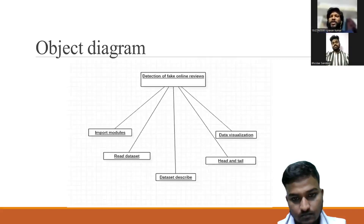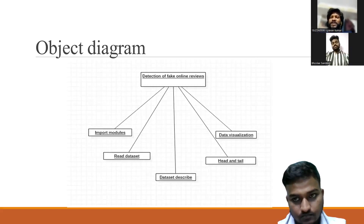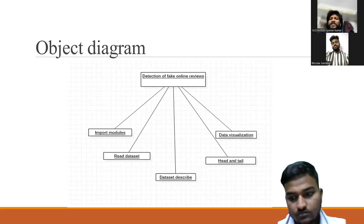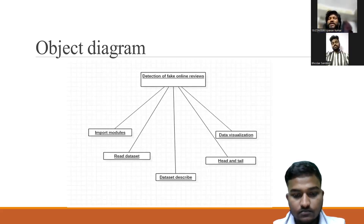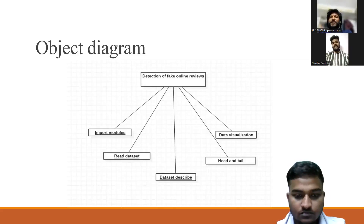The object diagram for detection of online fake reviews similarly imports the modules, reads the datasets, describes the dataset using head and tail, differentiates the truthful and fake reviews, and visualizes the data.